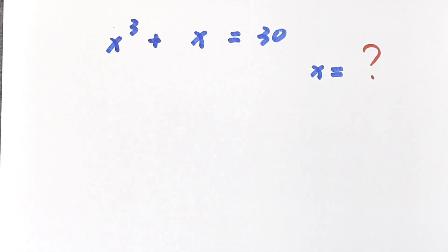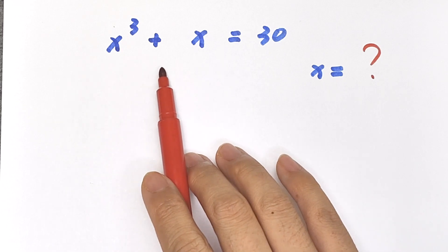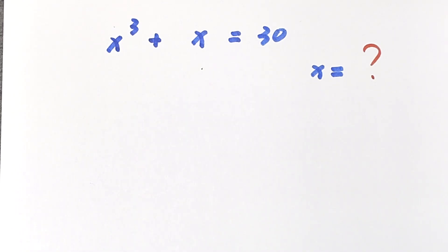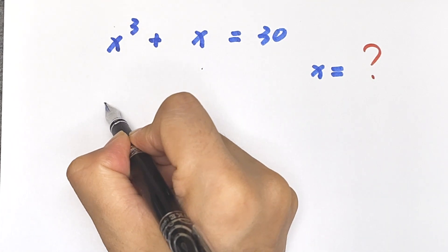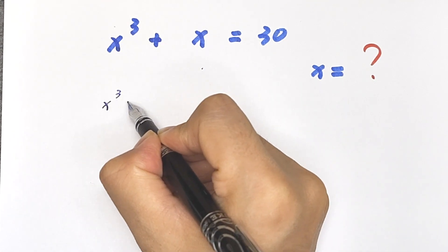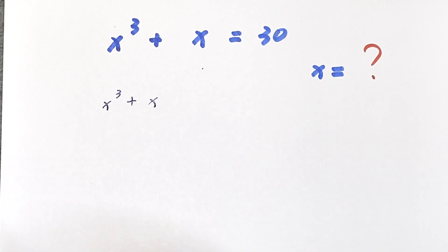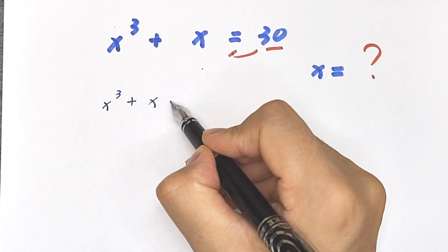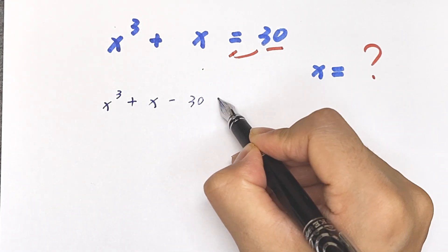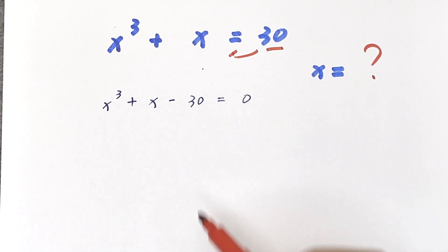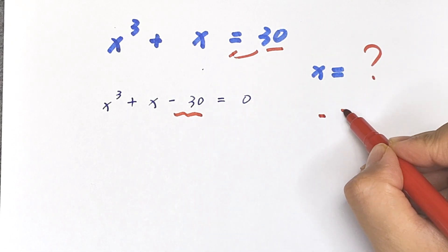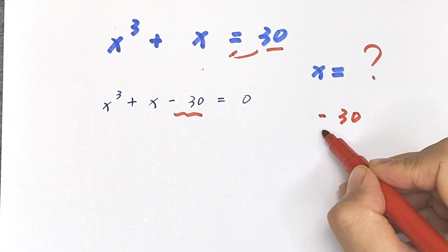Hello everyone, welcome to Math4U. How to solve x cubed plus x equals 30 to find the value of x. We take this to the left side: x cubed plus x minus 30 equals 0.